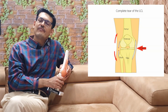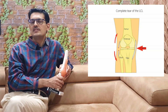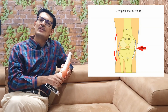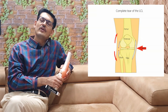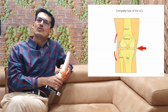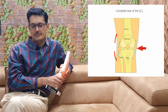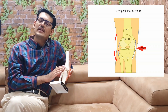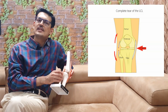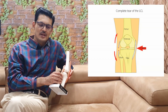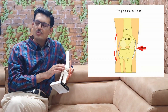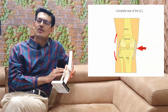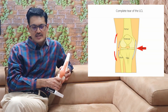Unaddressed LCL injuries are the most important cause of ACL reconstructions that are not successful. Isolated injury to the LCL is very rare — less than 2% of all injuries — and it more commonly occurs in association with other injuries. Approximately 7 to 16% are combined injuries: LCL with posterolateral complex, or LCL with ACL.